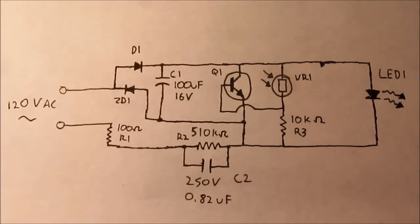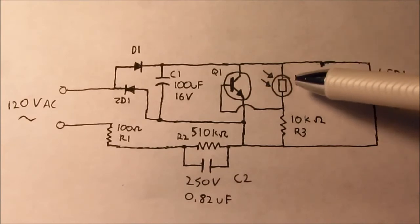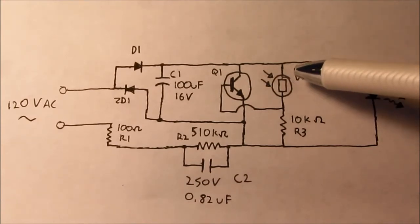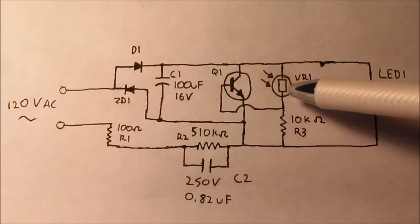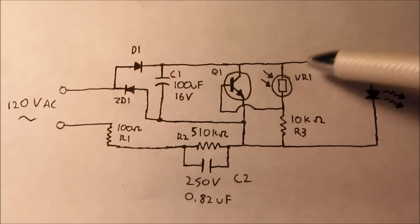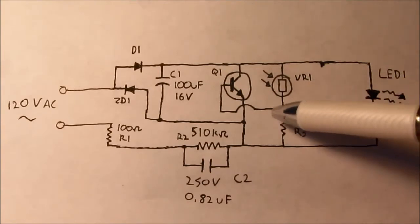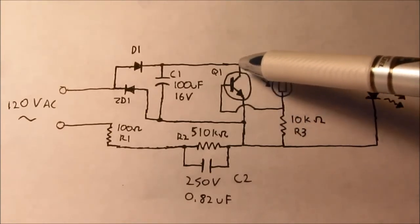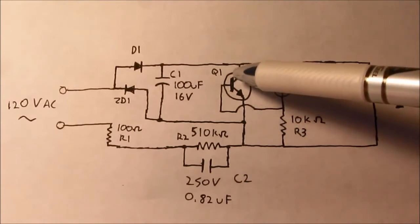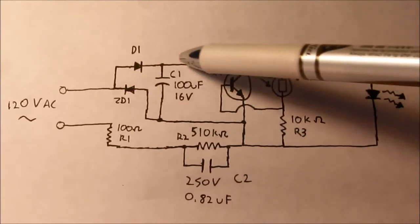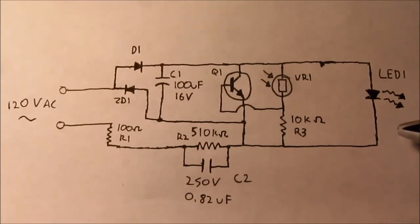When there is very little ambient light, the resistance of the photoresistor goes up, probably to many tens of thousands of ohms, or maybe even hundreds of thousands of ohms. This allows the 10 kilo-ohm R3 to pull the base of Q1 down. Since Q1 now turns off, the full voltage can be applied across the LED, turning it on.